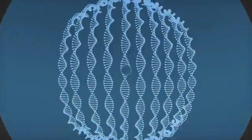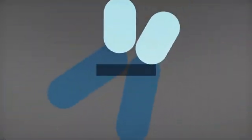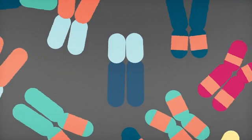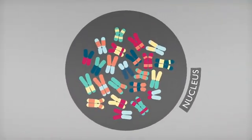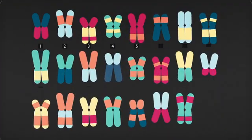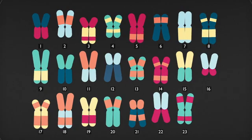DNA folds into paired packages called chromosomes that are stored in the nucleus of the cell. Different species have different numbers of chromosomes. Humans have 23 pairs.